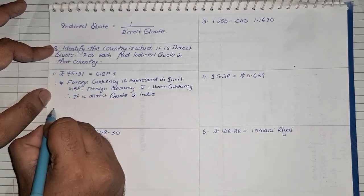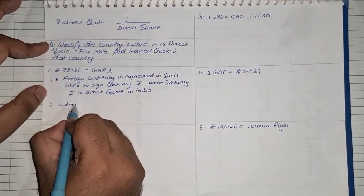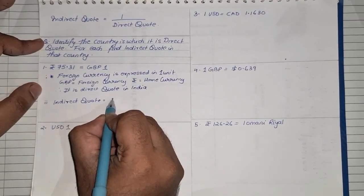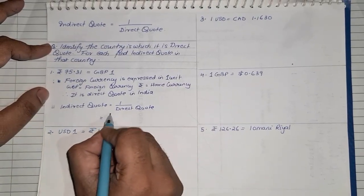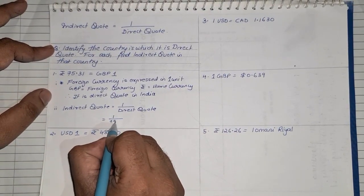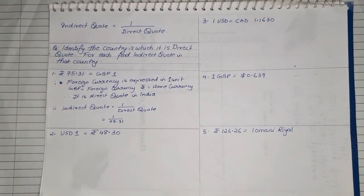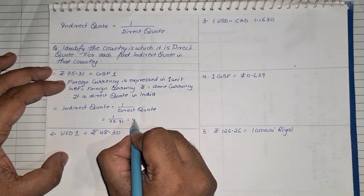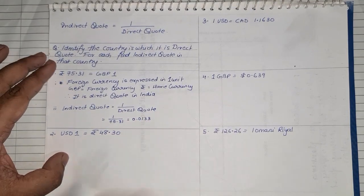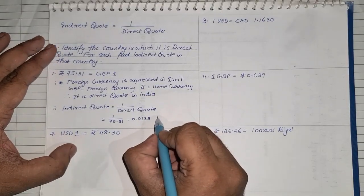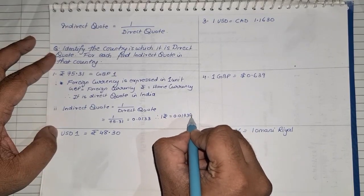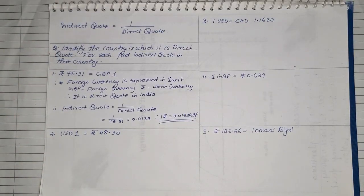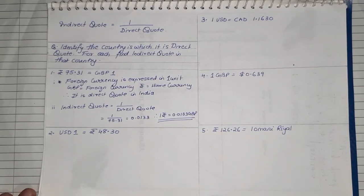Now for the second part, we need to find the indirect quote. Indirect quote is equal to 1 upon the direct quote, which is 1 upon 75.31. So 1 divided by 75.31 gives us 0.0133. Therefore, 1 rupee is equal to 0.0133 GBP. That's our final value.